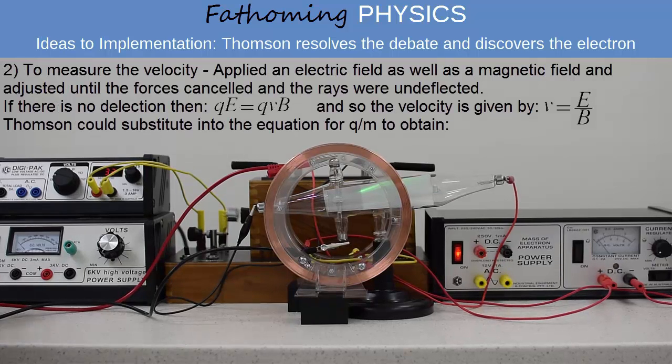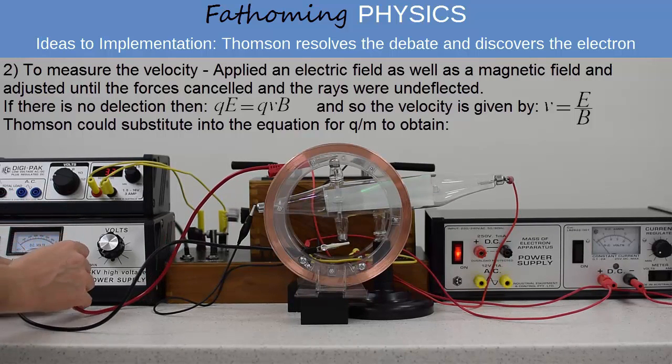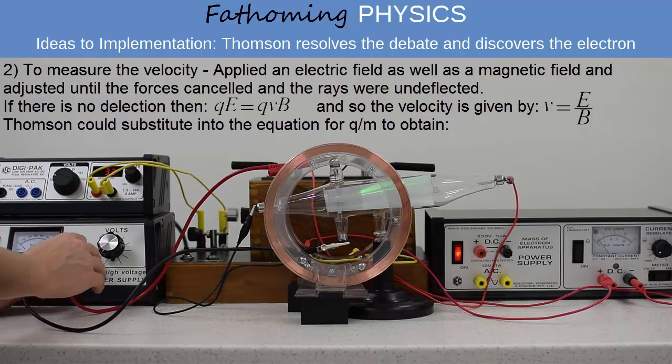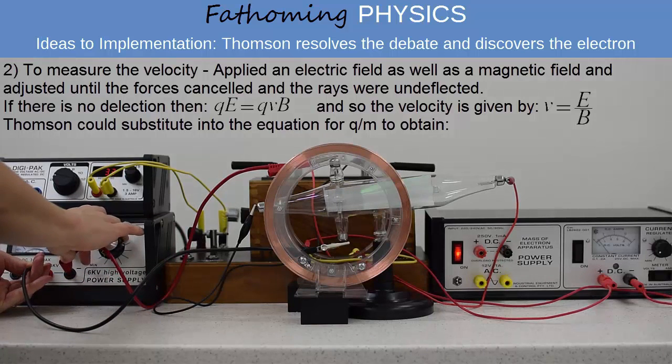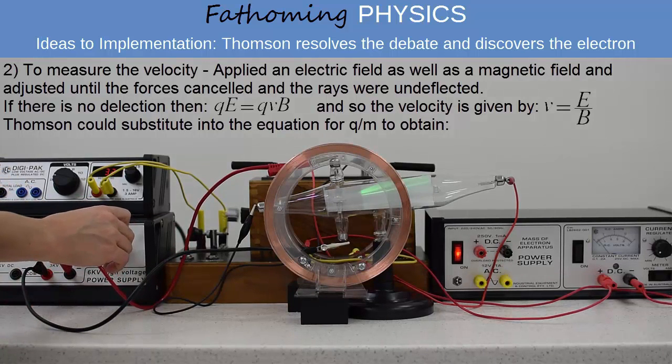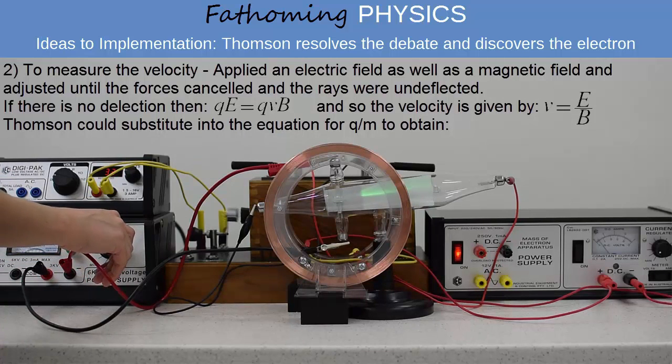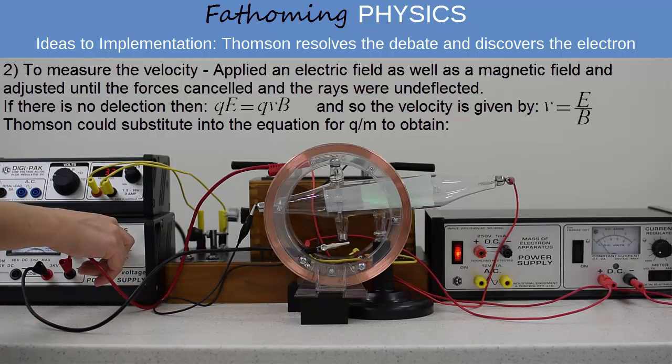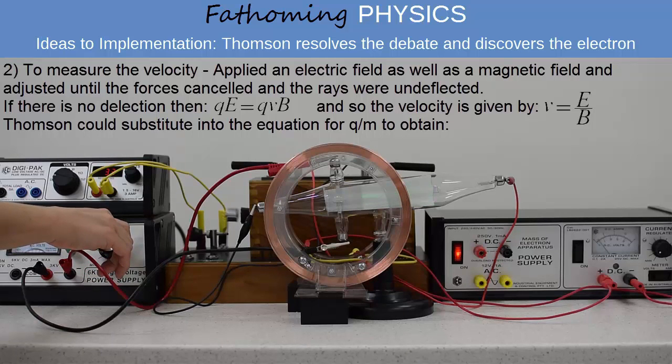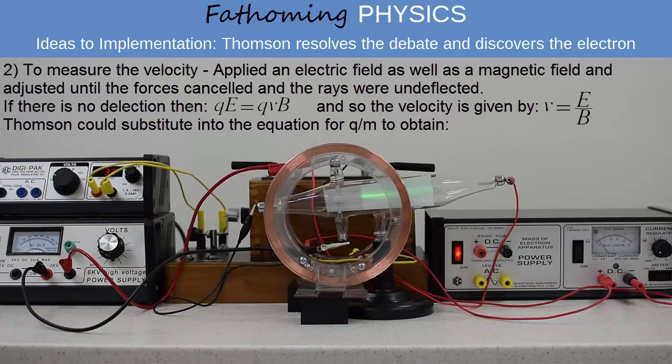His next step was to switch on the electric field and adjust it until the deflection due to the electric field exactly cancelled the deflection due to the magnetic field. Rearranging, he could obtain an expression for the velocity in terms of the electric field strength and the magnetic field strength. Substituting this into his previous equation for Q over M, he could obtain an expression for the charge to mass that only contained known measured values.